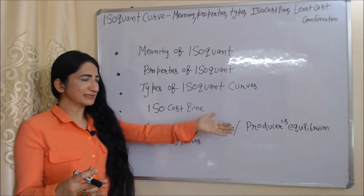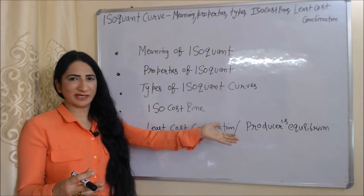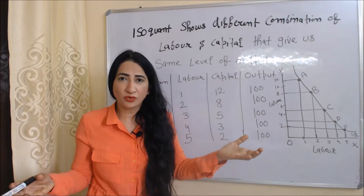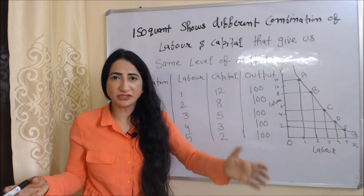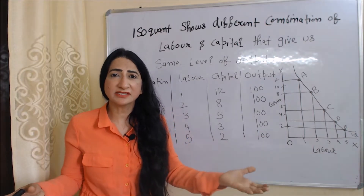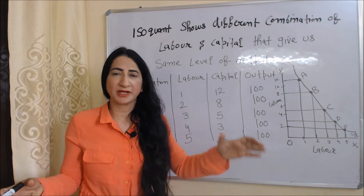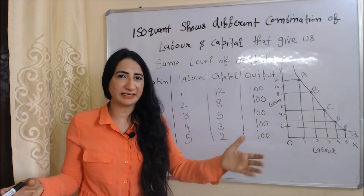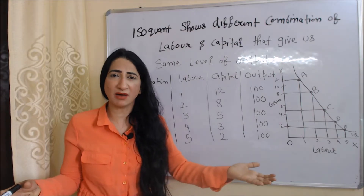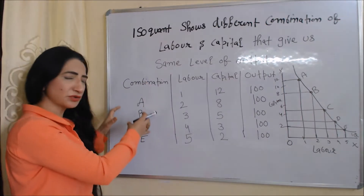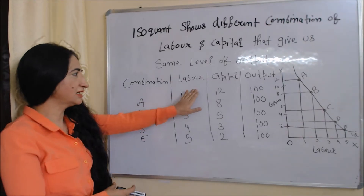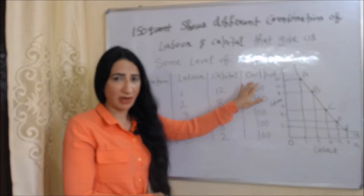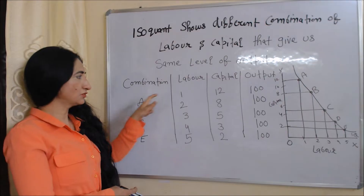So let's start. What is isoquant? Isoquant shows different combinations of labor and capital that give us the same amount of output. Here you can see: in the first column we have combination, the second column we have labor, the third column we have capital, and the last column we have output.